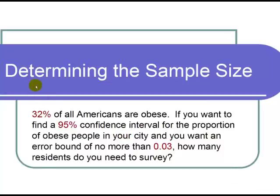This is a video on determining the sample size. The question states: 32% of all Americans are obese. If you want to find a 95% confidence interval for the proportion of obese people in your city and you want an error bound of no more than 0.03, how many residents do you need to survey?